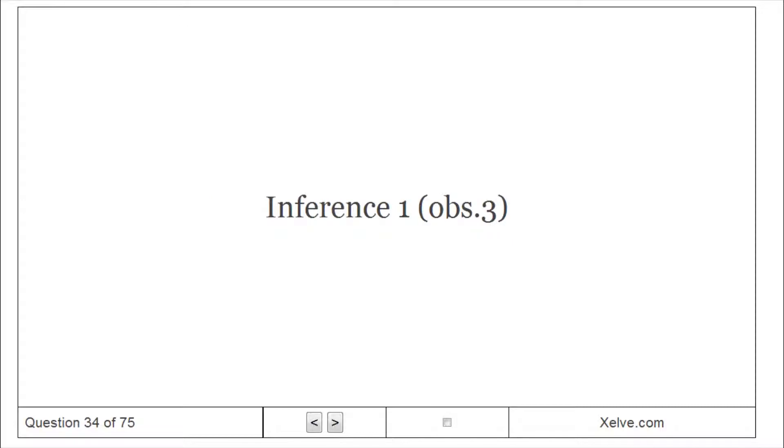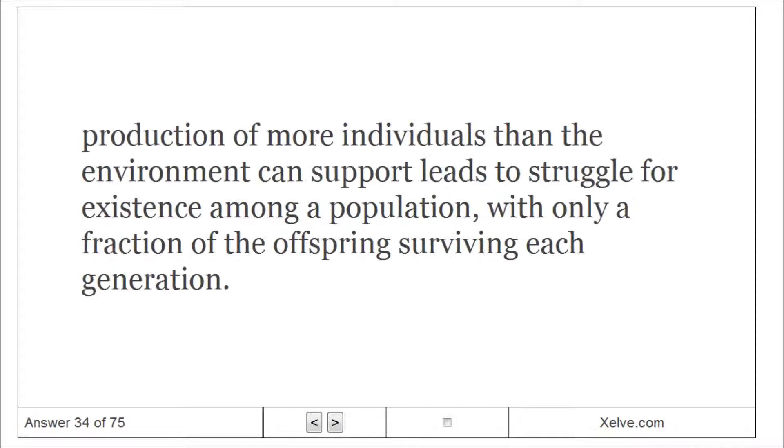Inference 1: Production of more individuals than the environment can support leads to struggle for existence among a population with only a fraction of the offspring surviving each generation.